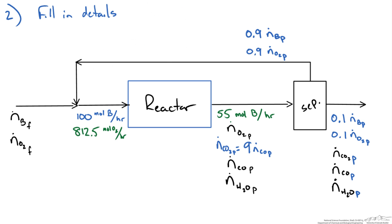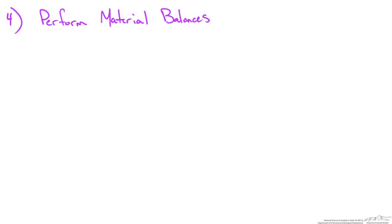At this point we have 3 unknowns, and since we have 3 different elements — oxygen, carbon, and hydrogen — we can use an atomic species balance for those 3 elements to solve for our 3 unknowns. We cannot use the extent of reaction method because we do not know the reaction to form carbon monoxide, so we will use the atomic species balance approach instead.